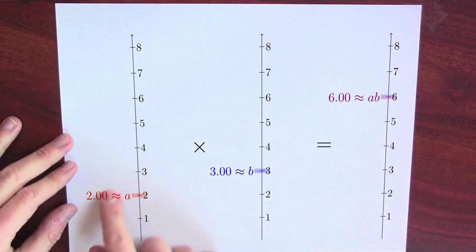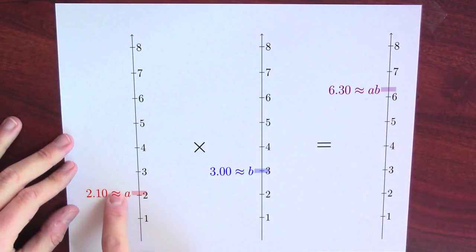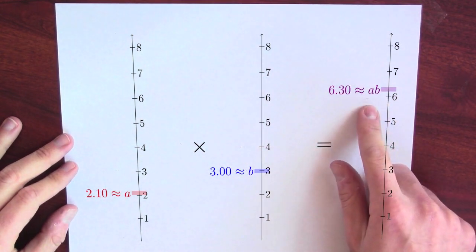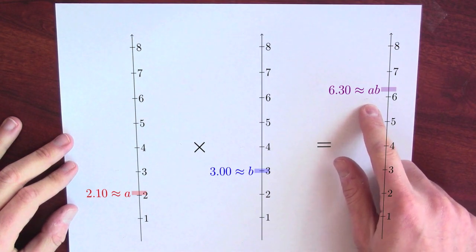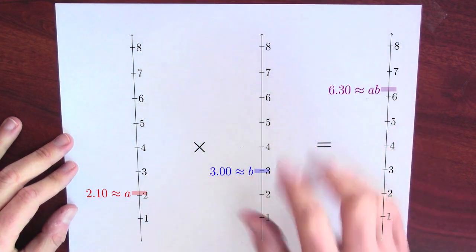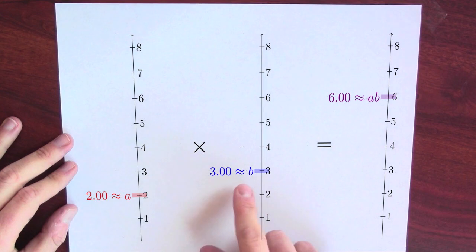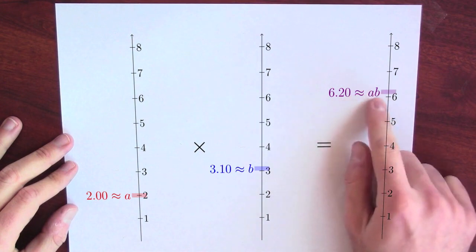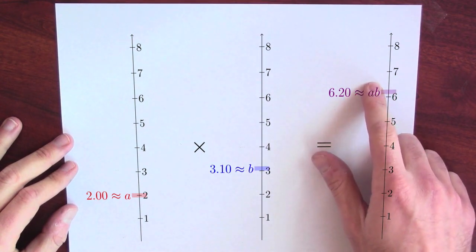So what if I take A and move it from 2 to 2.1? That affects the output. The output is now 6.3. Conversely, what if I move that back down and I move B from 3 to 3.1? That makes the output from 6 to now 6.2.